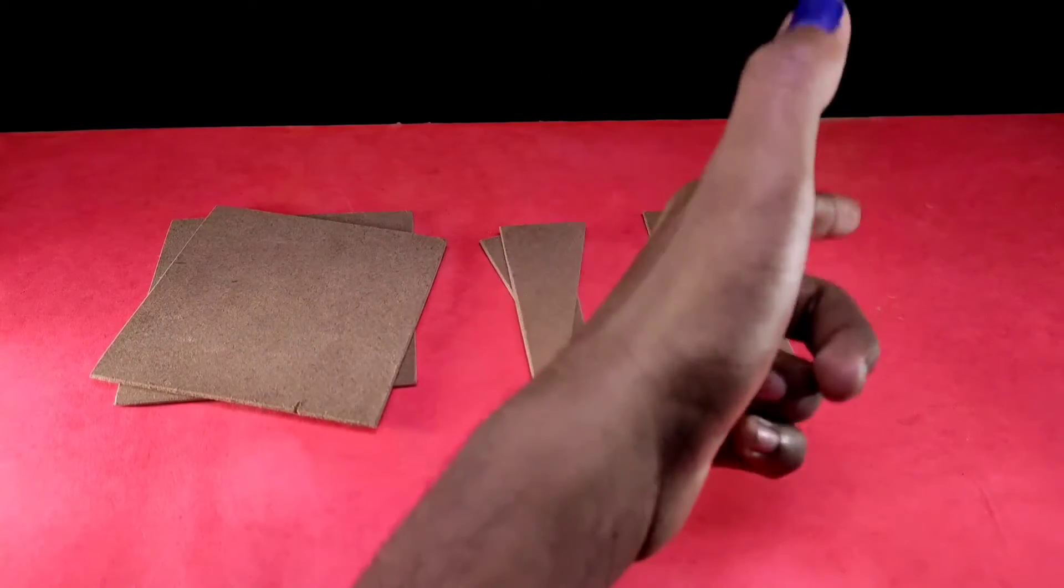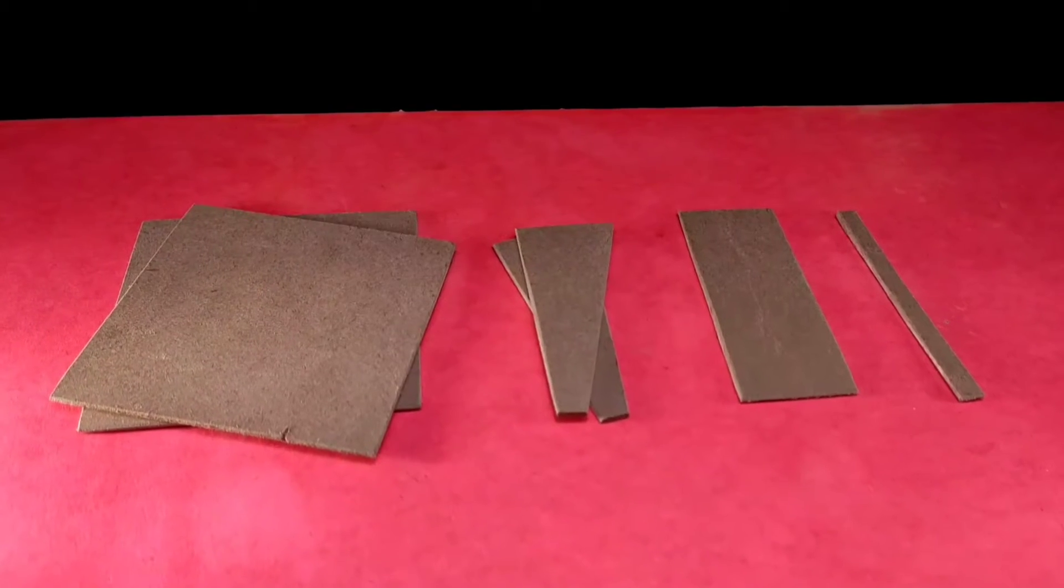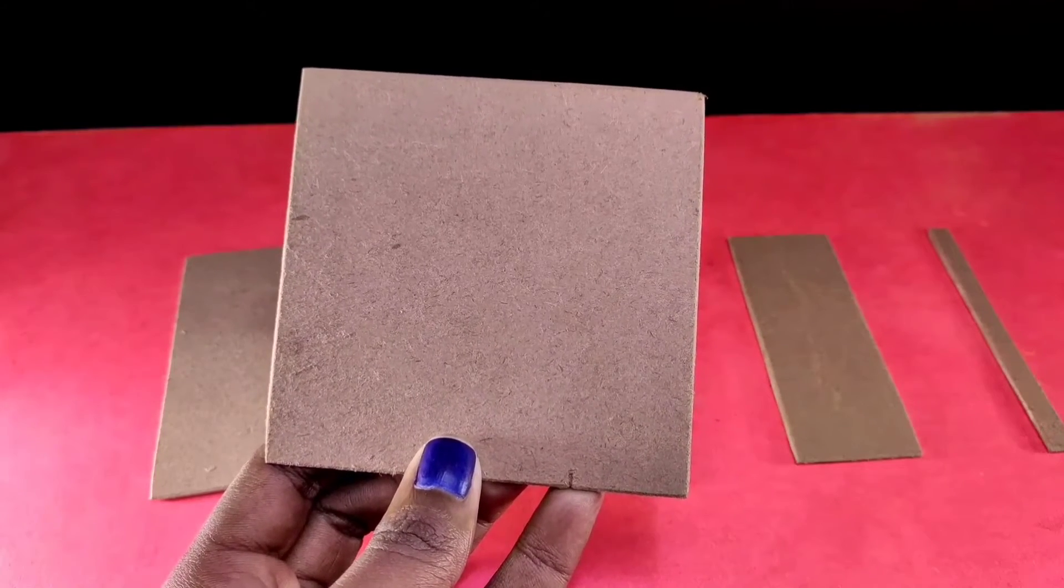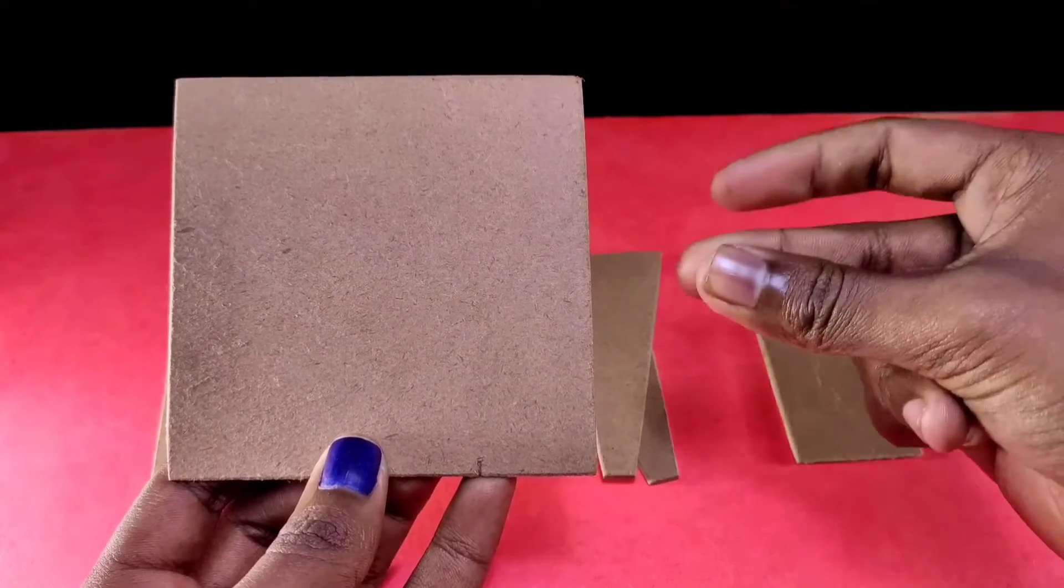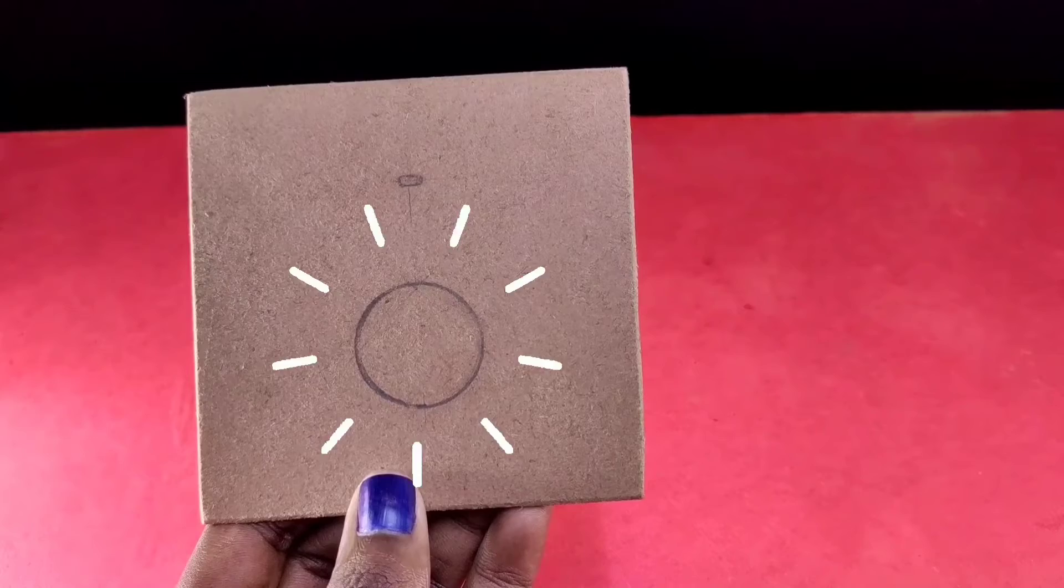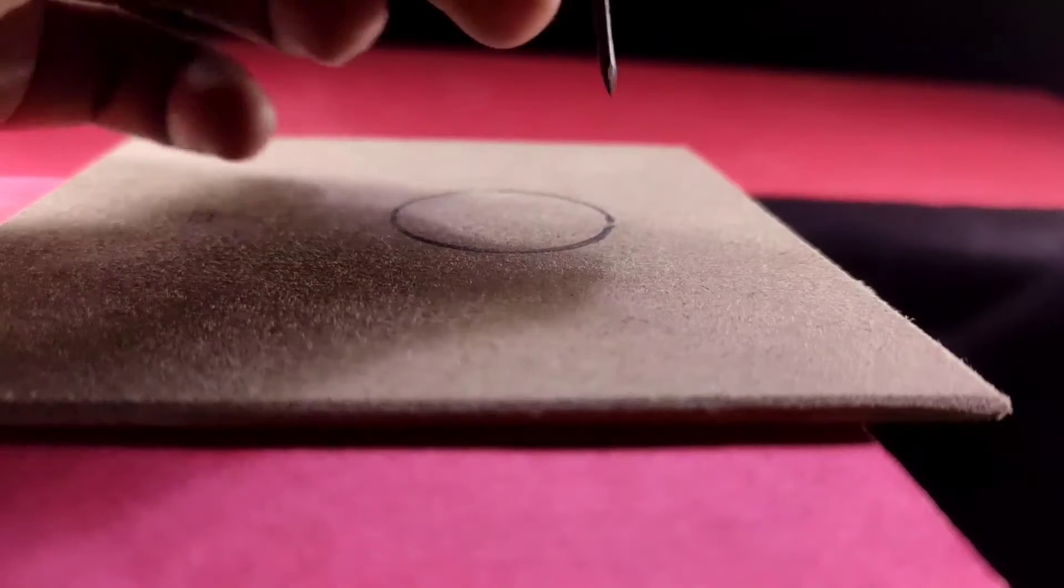Then I am taking some pieces of MDF board to make the structure of the automatic bulb holder circuit. I am making some necessary markings on this board and I will cut them.